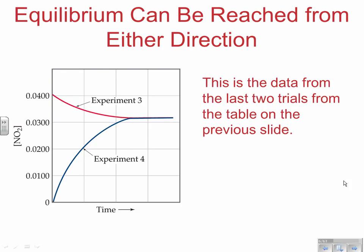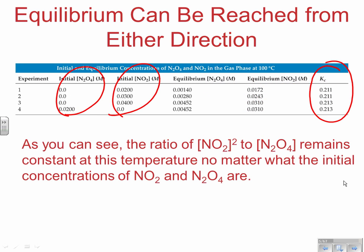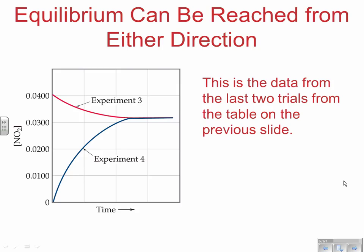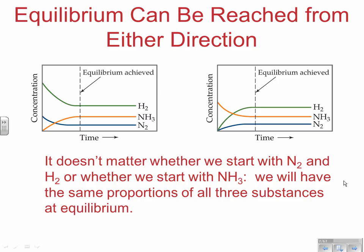This is data from the last two trials from the previous data table. From experiments 3 and 4, it doesn't matter what we start with in terms of N2 and H2, or whether we start with NH3, since we have two reactants and a product. Regardless of what we start with, we're going to reach equilibrium, and under the same conditions we end up with the same concentrations. Whether we start with N2 and H2 or with NH3, we reach equilibrium with the same proportions of all three species.